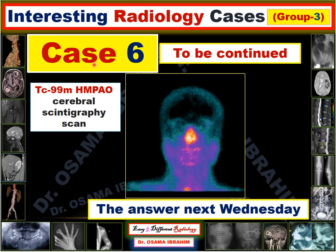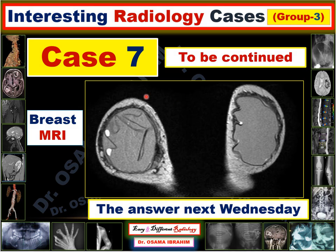As promised, there are two cases for challenging that I will answer next Wednesday. Case 6 is a technetium-99m HMPAO cerebral scintigraphy scan — try to solve the diagnosis and I will give the answer in the next presentation. Case 7 is a breast MRI — the answer will also be continued next Wednesday.